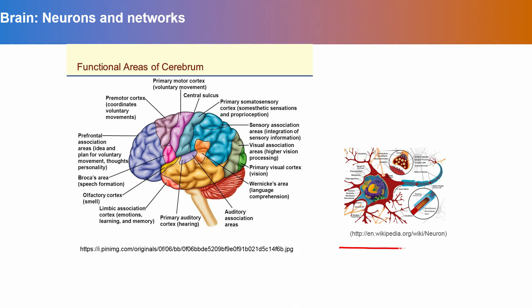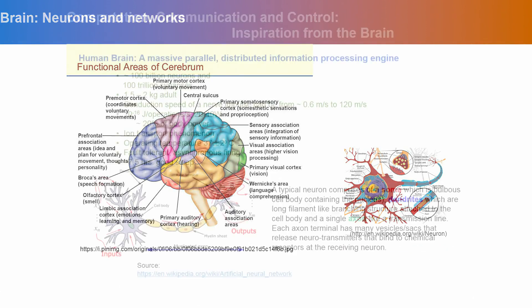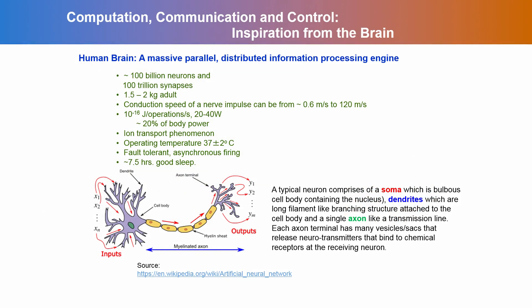The neuron is a very important fundamental unit of the brain. We are interested in biophysical models or plausible mathematical models which are realistic when we bring in networks. When you think about the brain, there is communication, computation, and control. One can think of the human brain — or in general a mammalian brain — as a massive parallel distributed information processing engine.